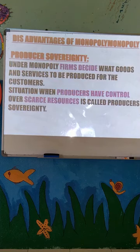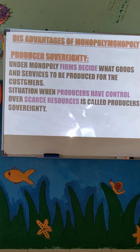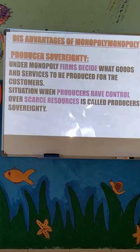The next disadvantage is producer sovereignty. Under monopoly, the firm decides what goods and services are to be produced for the customers. The situation where producers have control over the allocation of scarce resources is called producer sovereignty. The producers control the resources and decide what to produce — that situation is called producer sovereignty.